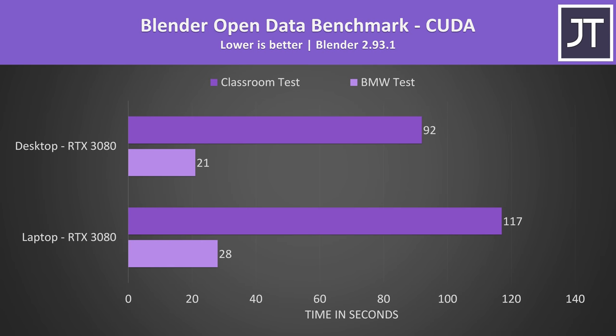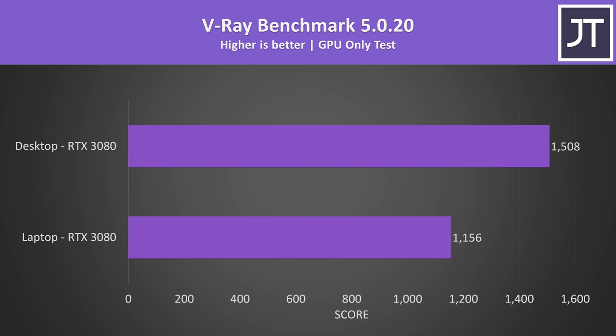Just before we get into the most important discussion of pricing and availability, let's check out some content creator workloads — it's not all just about gaming. Blender was tested with CUDA and the results were quite close together. The longer classroom test was 27% faster on the desktop 3080, though as a CUDA workload I was expecting a bigger difference.